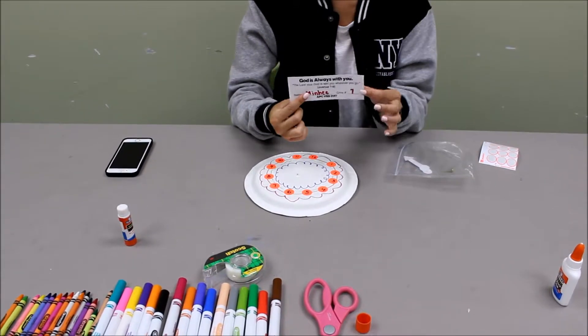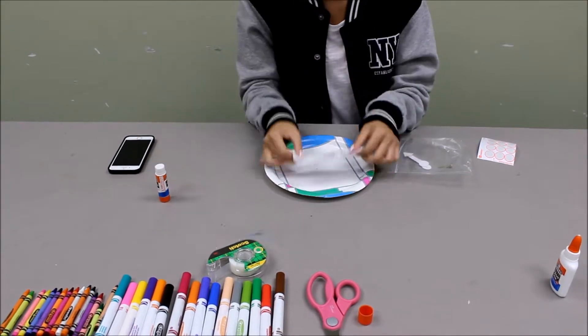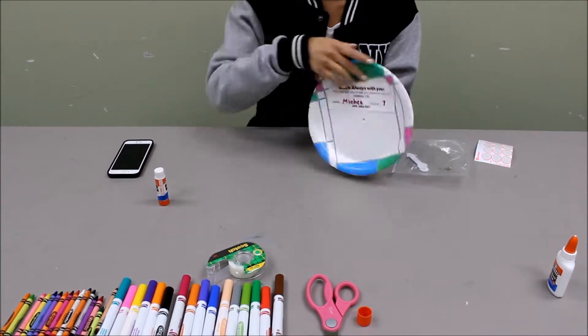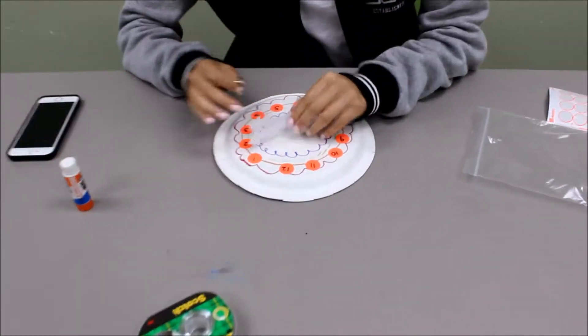When that is done, students can glue on their names and crew numbers after filling it out on the back of the plate. For this part, we also need volunteers and crew leaders to help, especially for the younger ones.